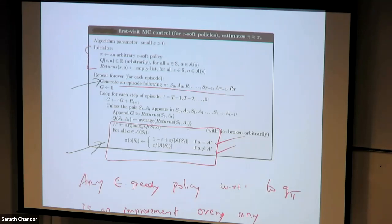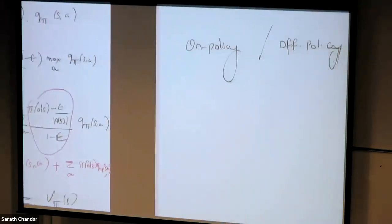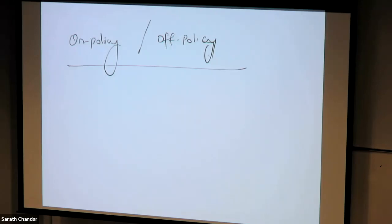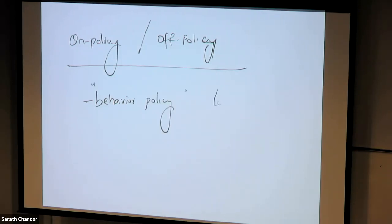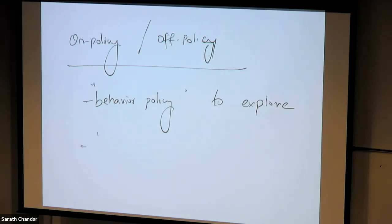What if I disentangle these two roles? What if I have a separate policy to generate trajectories — called the behavior policy — which we use to explore? Our goal is not to improve the behavior policy but to improve another policy called the target policy, which is the policy being learned and is the exploitation policy.